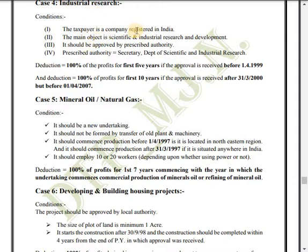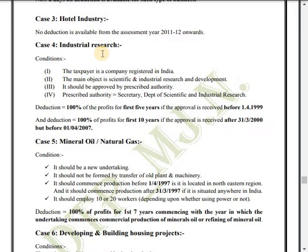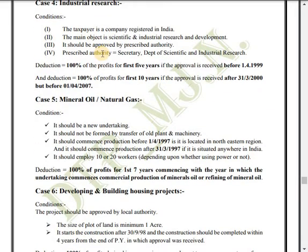Case 4 is industrial research. The taxpayer must be a company registered in India. To get deduction under Section 80IB for industrial research, you must fulfill the following conditions: first, it should be a company registered in India; second, the main objective is scientific and industrial research and development; third, it should be approved by the prescribed authority, such as the Secretary of the Department of Scientific and Industrial Research.